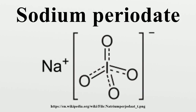Sodium metaperiodate forms tetragonal crystals consisting of slightly distorted IO4 ions with average I–O bond distances of 1.775 Å. The Na⁺ ions are surrounded by 8 oxygen atoms at distances of 2.54 and 2.60 Å. Sodium hydrogen periodate forms orthorhombic crystals.